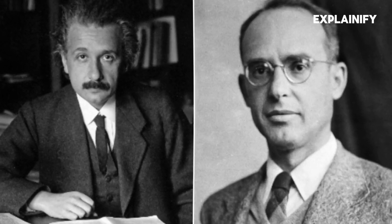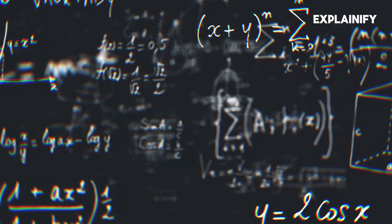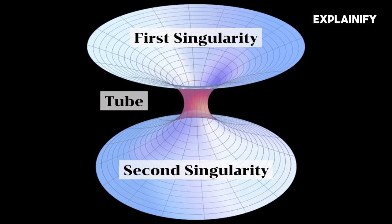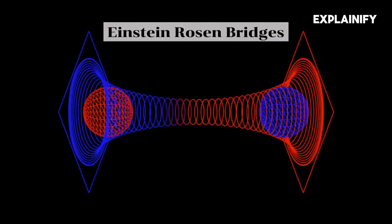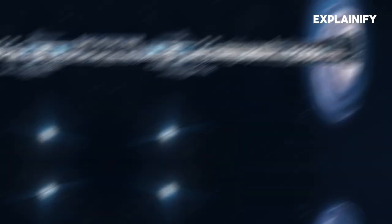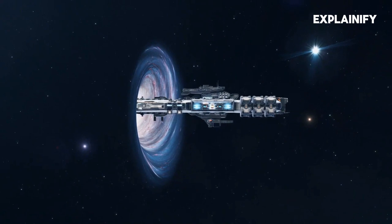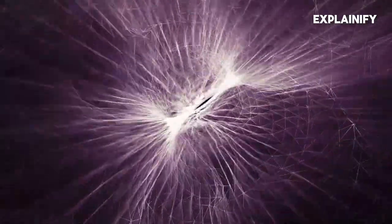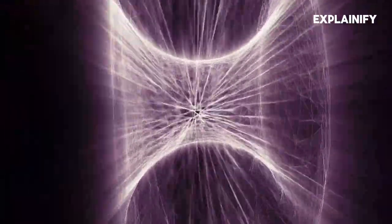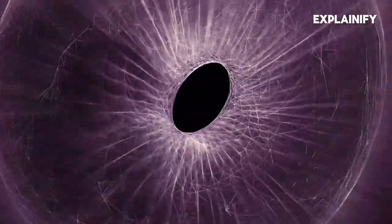Rosen and Einstein played around with other possible solutions, including using some creative mathematics to replace two singularities with a tube that connected them. These tubes are called Einstein-Rosen bridges, or more commonly, wormholes. In principle, it would be possible to have an object enter one wormhole and exit the other, even though the ends of the wormholes are separated by large distances. This work is called ER theory.